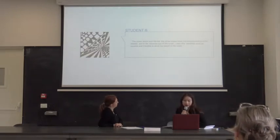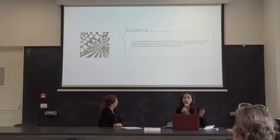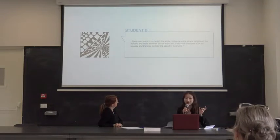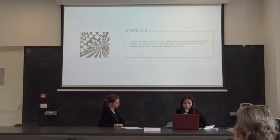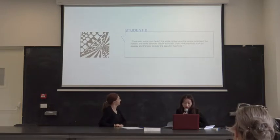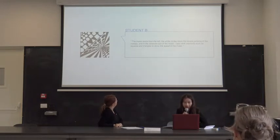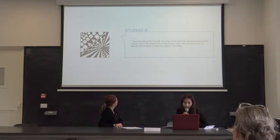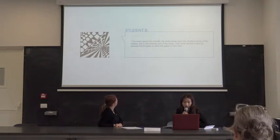One student said the circle shows a simple melody representing drums, followed by triangles and squares added as the music changed. Student B said the music starts from the left, which is interesting because he could feel the direction of the music. The wide circle shows the simple jumping of the melody, and in the second part of the music he added other elements such as triangles and squares to show the speed of the music.